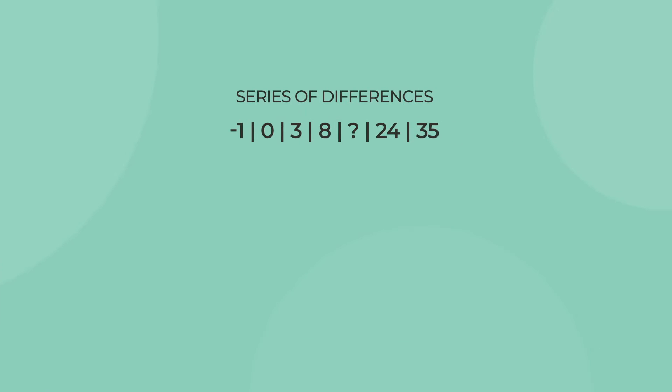Each question consists of a series of numbers. Your job is to identify the logical rule behind each series and determine which number or numbers complete the series. Take a look at this series for example. This is what is called the series of differences. The differences between every two numbers form a series of odd numbers. Following this rule, the missing number is 15.